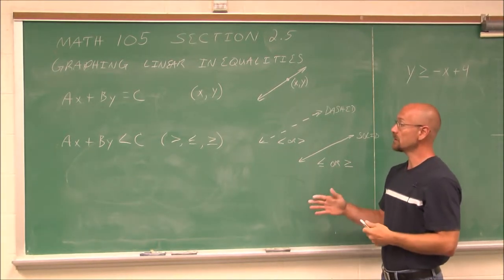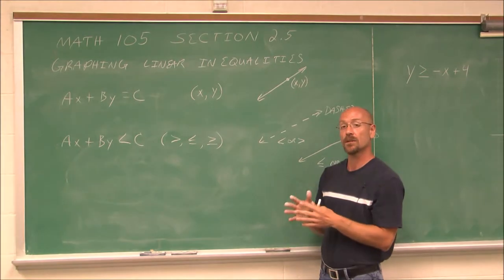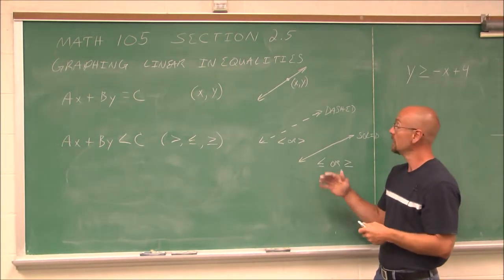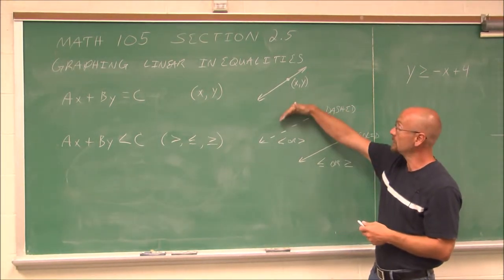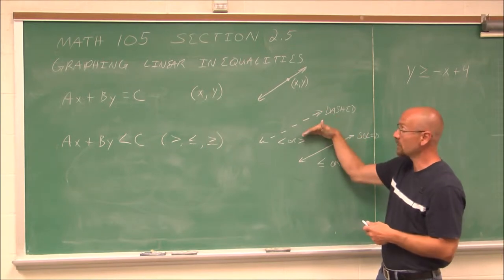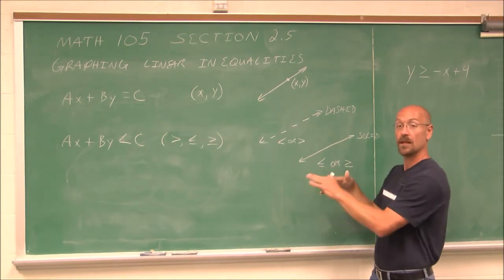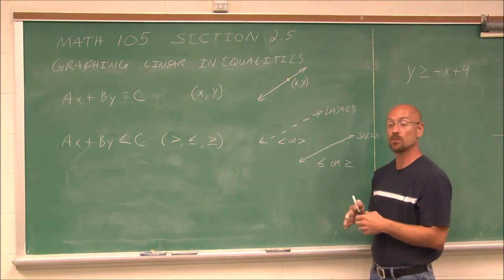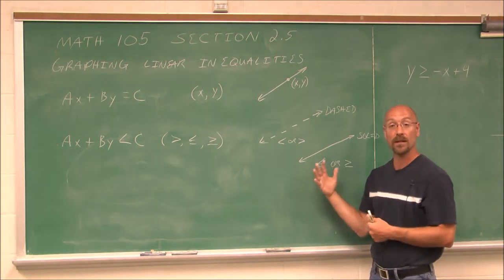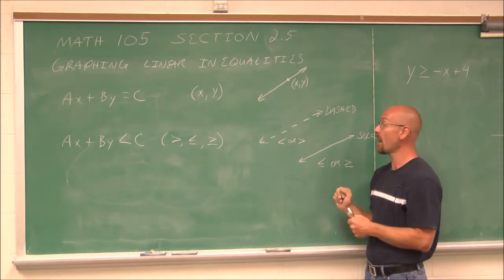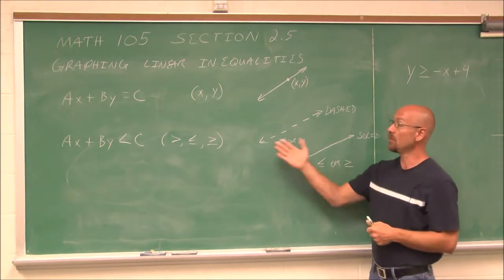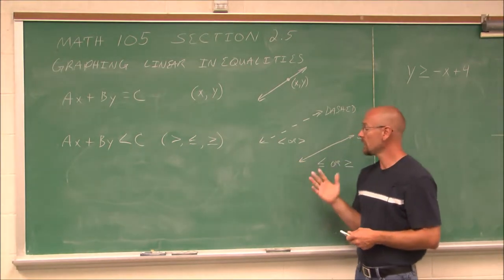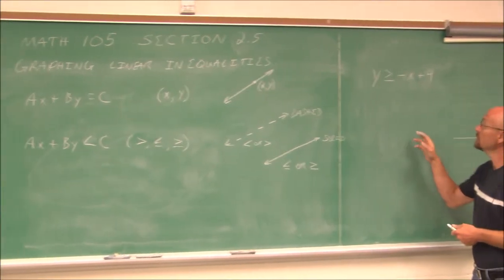The difference is, when we deal with an inequality, it actually divides the graph into two areas — an area above the line and an area below the line, or to the left and to the right of the line. What we have to do is determine the area of that graph that would make the inequality a true statement. So let's go ahead and look at an example.